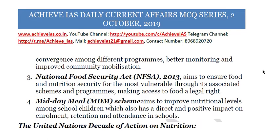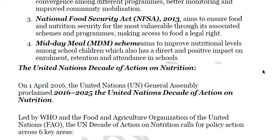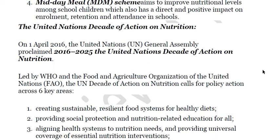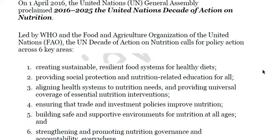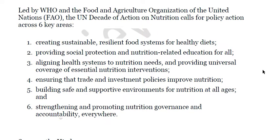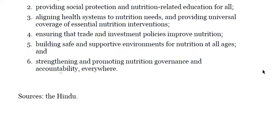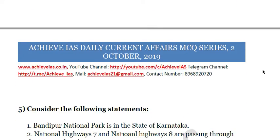Other government schemes include the National Food Security Act, the Mid-Day Meal Scheme, and Integrated Child Development Services (ICDS), which provides nutrition through Anganwadi centers. There is also the United Nations Decade on Nutrition, which started from 2016 and will continue till 2025, led by WHO and the Food and Agriculture Organization. The UN Decade of Action on Nutrition calls for policy actions across six key areas: creating sustainable resilient food systems, providing social protection, aligning health systems to nutrition needs, ensuring trade and investment policies improve nutrition, building safe and supportive environments for nutrition, and strengthening nutrition governance and accountability.